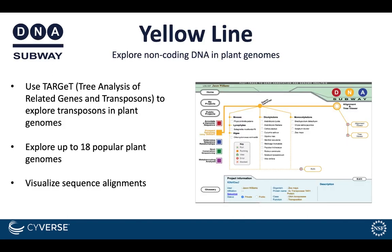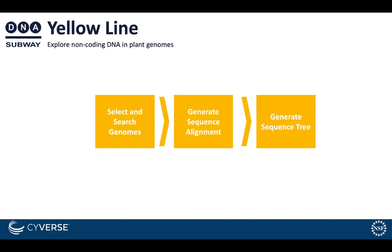DNA Subway Yellowline is a workflow for exploring non-coding DNA in plant genomes. Using Target, you can explore up to 18 popular plant genomes and visualize their results. You can select and search your choice of genomes, generate sequence alignments, and generate sequence trees.